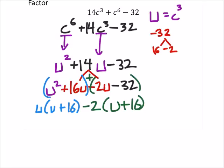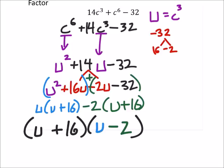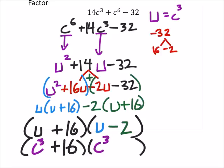And so, I can factor out a u plus 16. And then I have left over the u minus 2. But now I want to go in and replace the u's with that c cubed. So I'm still going to have the plus 16. So u is c cubed, this u also c cubed. But now it's minus 2.